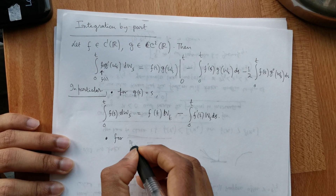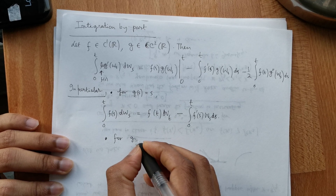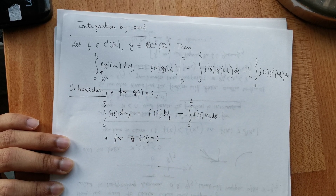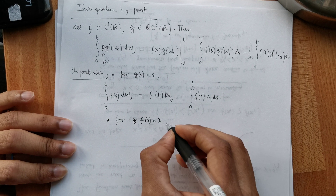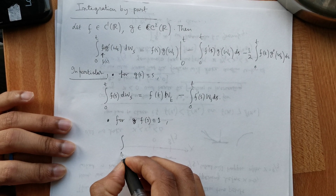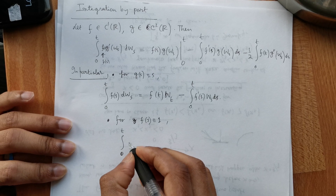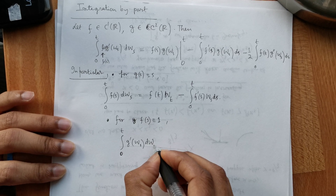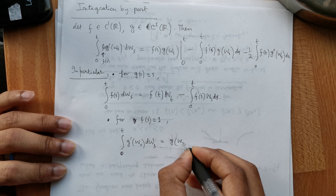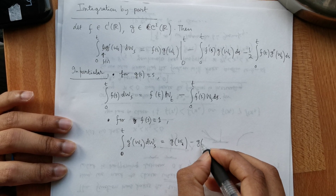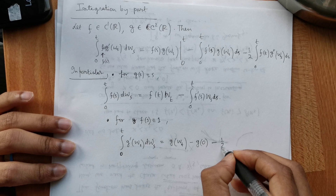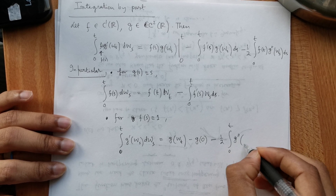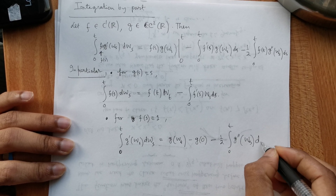And for f(s) equal to 1, we have the integral from 0 to t of g'(W_s) dW_s equals g(W_t) minus g(0) minus one half times the integral from 0 to t of g''(W_s) ds.